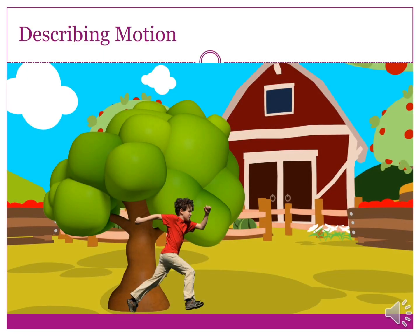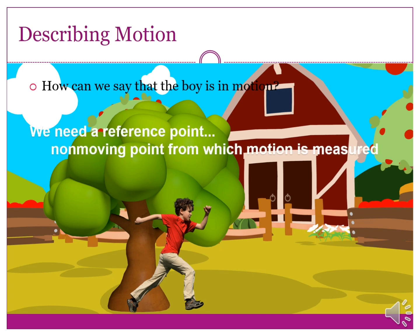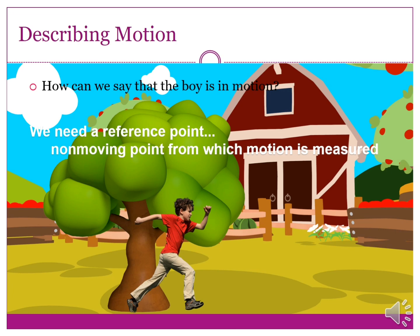How can we describe motion? In the picture, how can we say that the boy is in motion? To find out if the boy is in motion, you have to look for the point of reference. A reference point is a non-moving point from which motion is measured. It is our basis in determining if the object is changing its position. Based on the picture, what is our reference point?